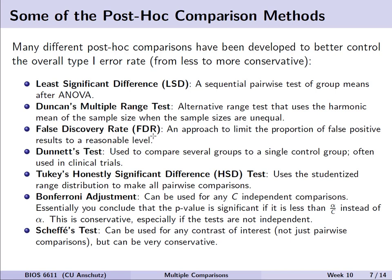We also have other approaches like the false discovery rate, which limits the proportion of false positive results to a reasonable level. Or there is the Bonferroni adjustment, which is very straightforward and intuitive. In the Bonferroni correction, we take C independent comparisons and divide our alpha level by C. So instead of 0.05, if we do 5 tests, alpha divided by 5 is 0.01. However, this is pretty conservative, especially if our tests are related in some way.